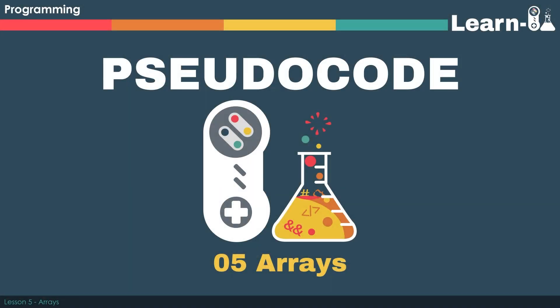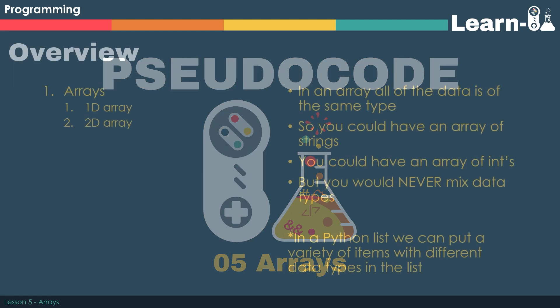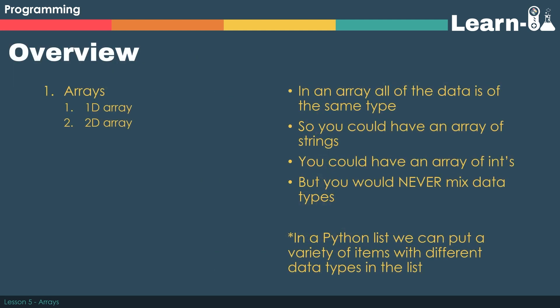Hi everyone, welcome to the fifth lesson in the pseudocode series. We're going to take a look at arrays. In previous lessons we looked at lists in Python, and in Python you could have a list that's made up of a float or various strings or integers and you can mix and match.